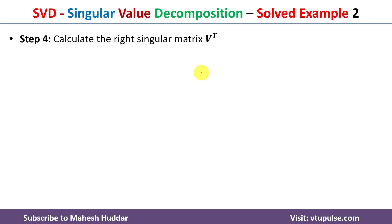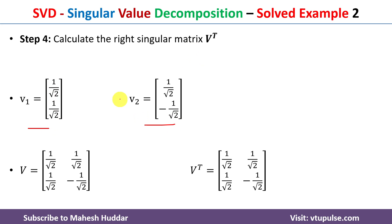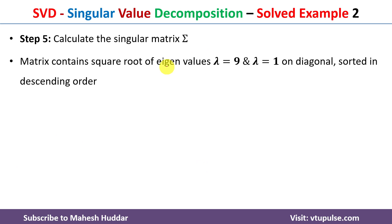The right singular matrix V is formed by placing v1 and v2 as its columns: V = [1/√2, 1/√2; 1/√2, −1/√2]. V-transpose is obtained by converting rows to columns. The singular matrix Sigma contains the square roots of the eigenvalues on its diagonal, with the largest first: √9 = 3 and √1 = 1. The remaining elements are zero.